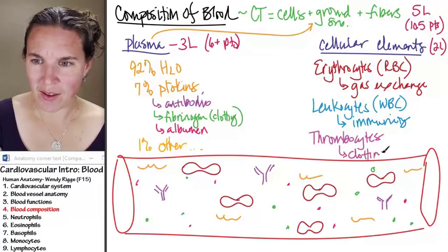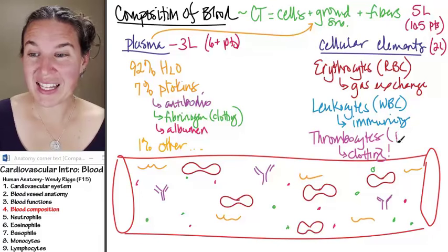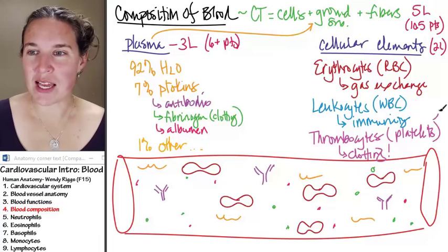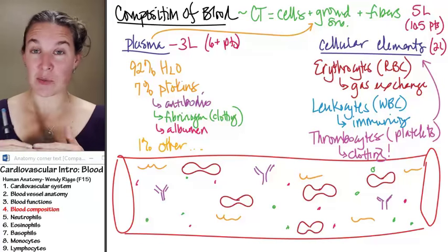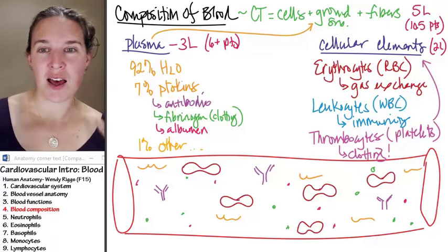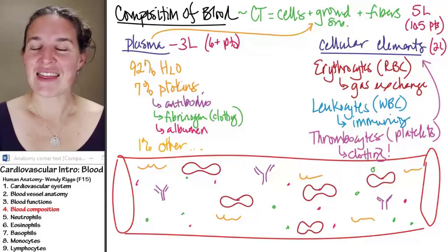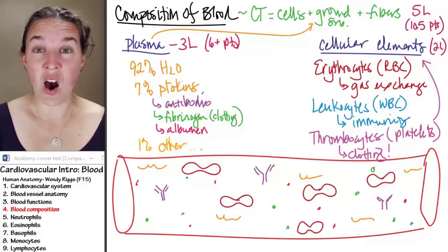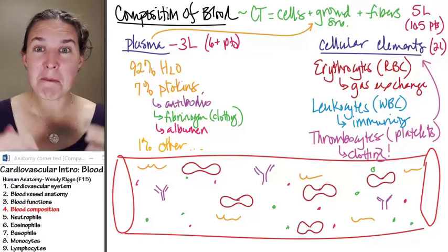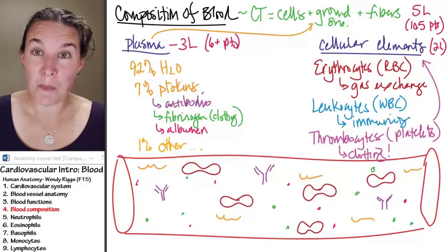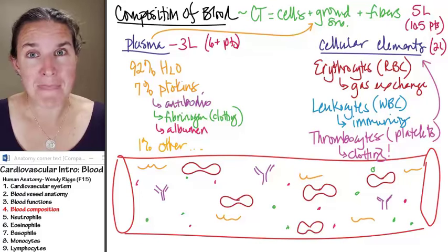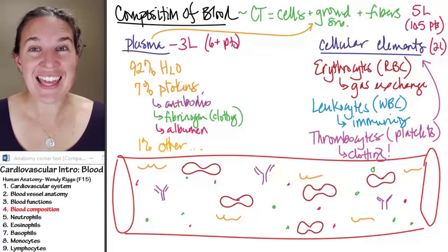Who are they? They're platelets. And this is where the platelets are why we labeled this as cellular elements and not cells, because platelets, they're pretty fantastic. They're actually broken off cell pieces from these massive cells in your bone marrow called megakaryocytes.